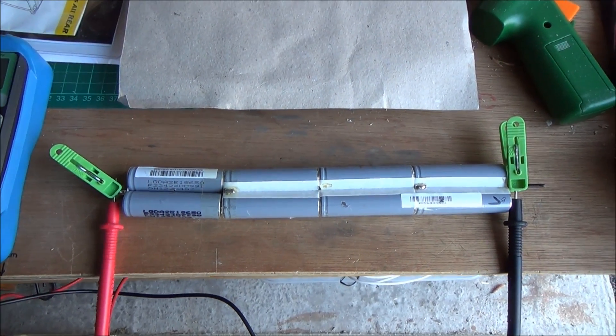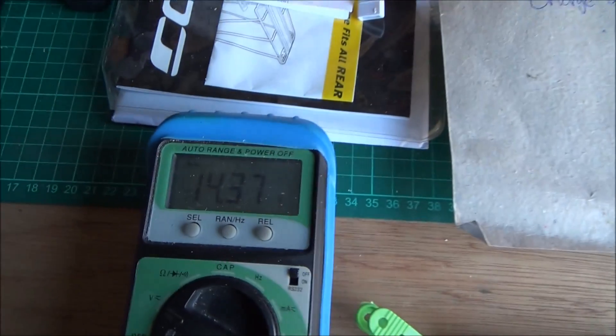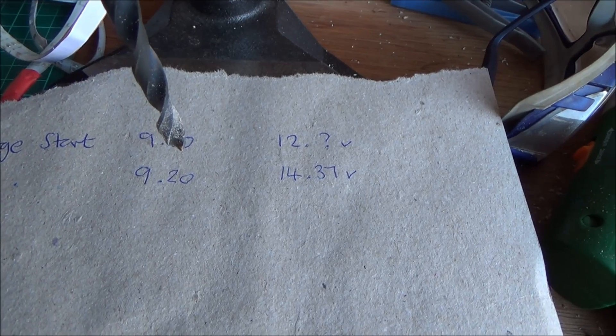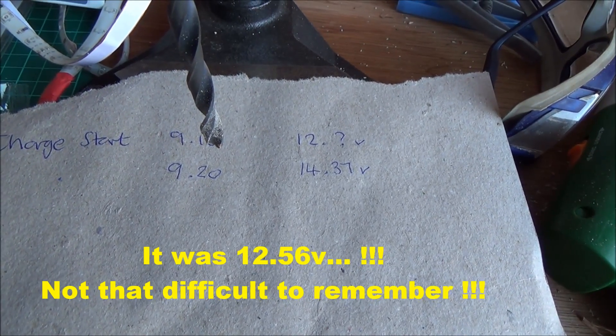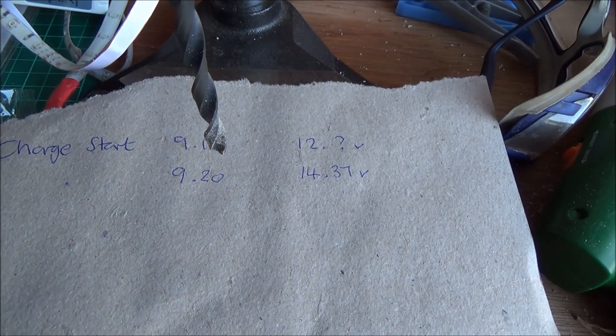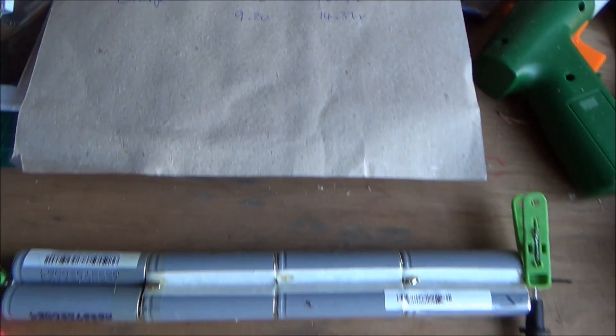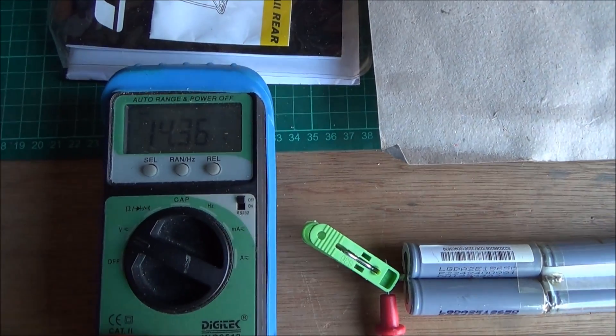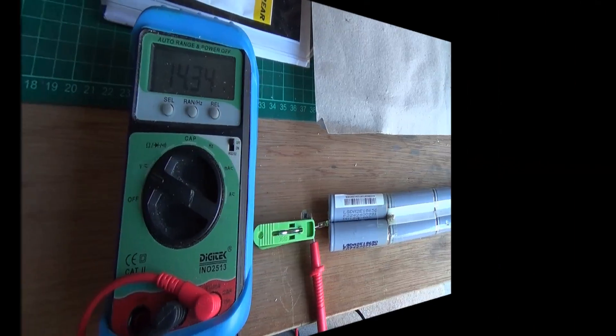Got the meter on there. 14.376. And we're just going to keep a note there. So at 10 past nine it was 12.5 whatever it was. And we've put it on charge for five minutes. And now we're at 14.37. So we'll check that now at regular intervals. Didn't get warm at all when it was charging, it was only on for five minutes. 14.36, seems a bit more stable now.